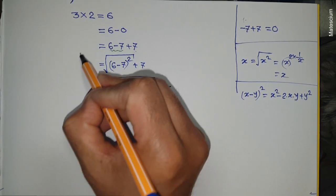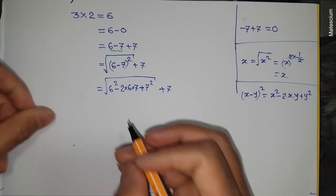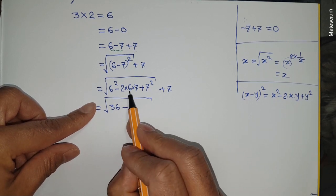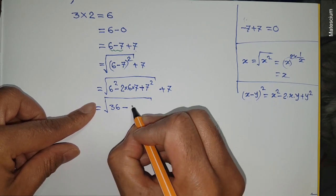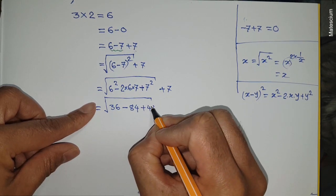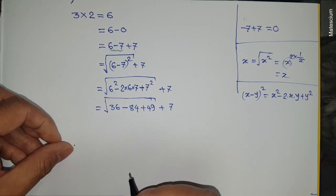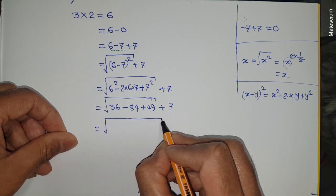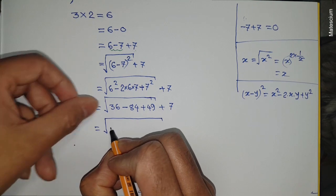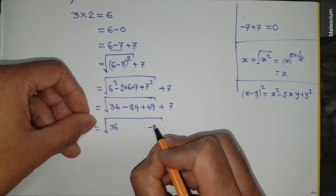Six squared means 36, minus 2×6×7 which equals 84, plus seven squared means 49, and this seven remains plus seven as before. Now I want to introduce mathematical engineering in this part. Look carefully - I'm writing the same thing here: 36, then write this minus 84 as minus 84.